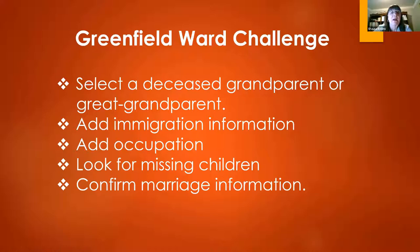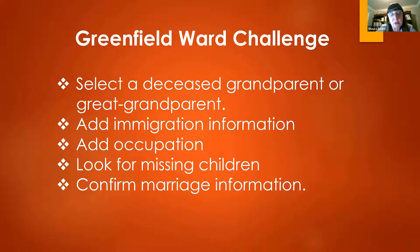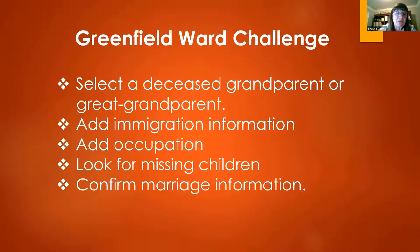Our challenges this week: select a deceased grandparent or great-grandparent and see if there's immigration information on them. Remember immigration takes various forms — you can't be naturalized without it. If you see the letters PA, it's papers of intent. If you see NA, they are naturalized, so you can look for court papers of their immigration and naturalization. Make sure any occupation listed is added to FamilySearch, that the number of children and names line up with each census, and confirm marriage information.